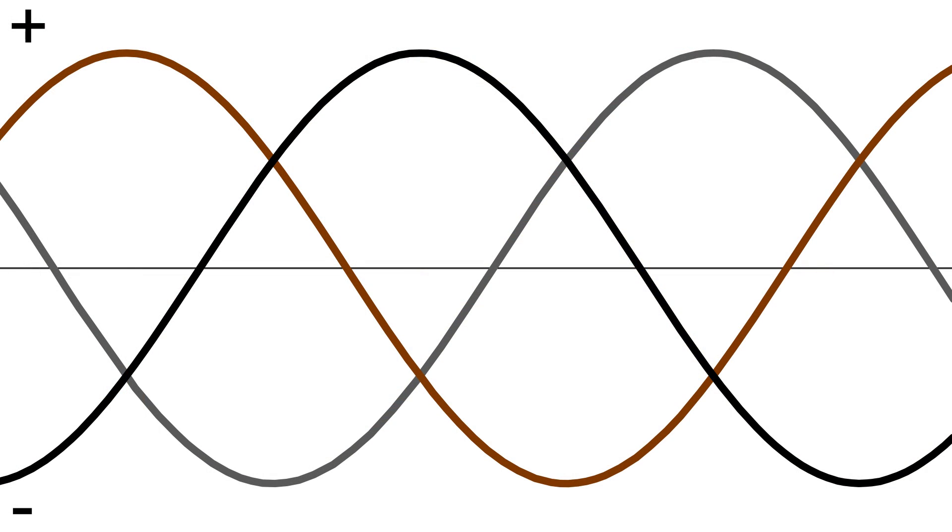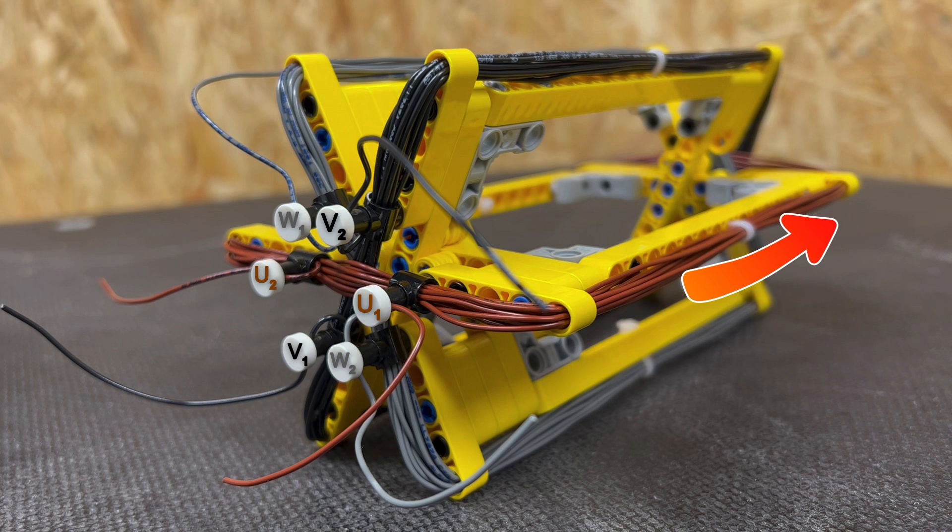We'll take another look at our sine wave but we'll freeze it at a moment in time. So here you can see the current flowing through line one is at maximum in the positive part of the graph and so is going into U1 and around the coil this way.